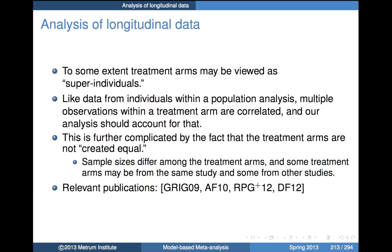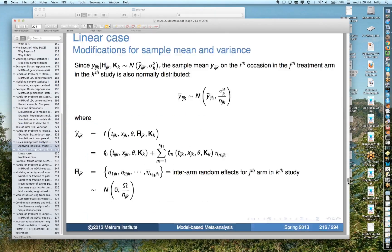This is further complicated by the fact that treatment arms are not created equal: sample sizes differ among treatment arms, and some treatment arms come from one study, some from another. We need to account for things that may be different across studies. There are some publications relevant to the approach I'll be describing, and let me go to the bibliography to identify the most relevant ones.